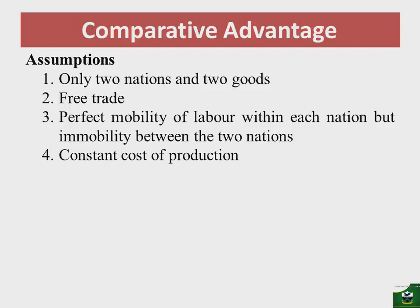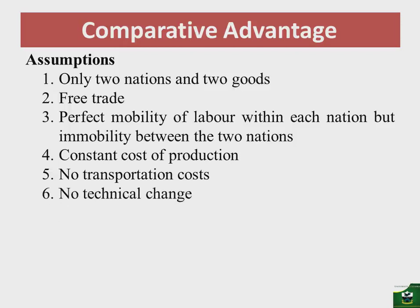Assumption five: we assume no transportation costs, meaning commodities can freely move from one country to another at no cost. Assumption six: we assume no technical change, meaning whatever techniques the country has employed will be used throughout the production process. Finally, assumption seven: we assume the labor theory of value, meaning labor is the only factor of production.